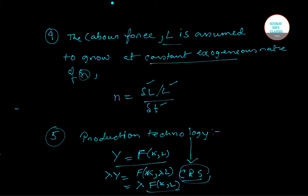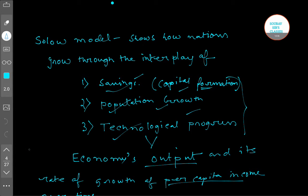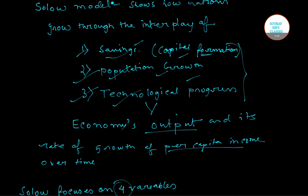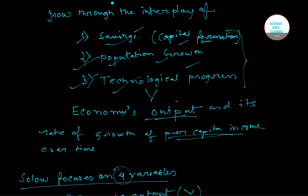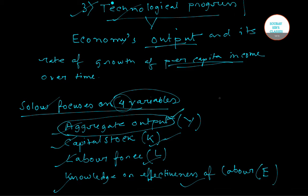So those are the five assumptions. I'd like to conclude this video here. In the next video we'll go to the capital accumulation part. To recap: the Solow model shows nation growth through the interplay of savings, population growth, and technological progress. The economy's output and per capita income depend on these three factors. Solow focuses on four variables: aggregate output Y as the dependent variable, and capital stock K, labor force, and knowledge or effectiveness of labor as independent variables.